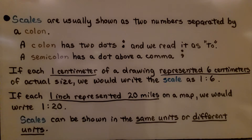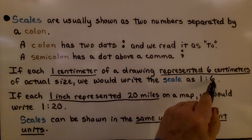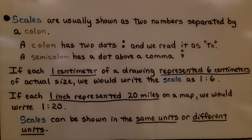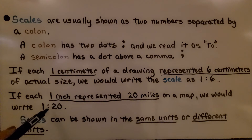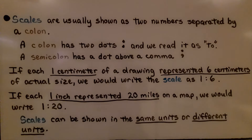If each one centimeter of a drawing represented six centimeters of actual size, we would write the scale as 1 to 6. If each one inch represented 20 miles on a map, we would write 1 to 20. Scales can be shown in the same units, like centimeter to centimeter, or in different units, like inch to miles.